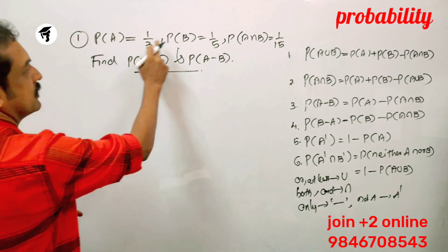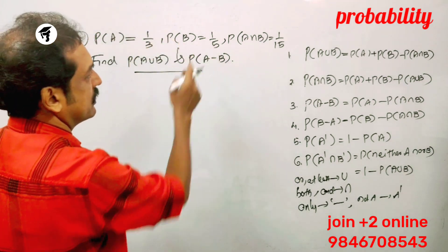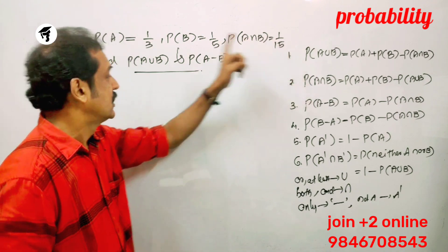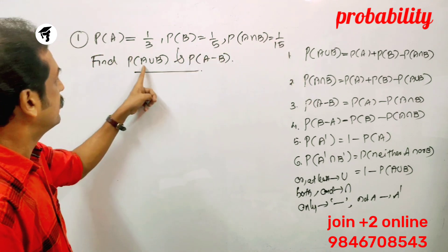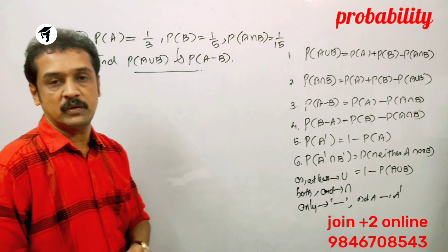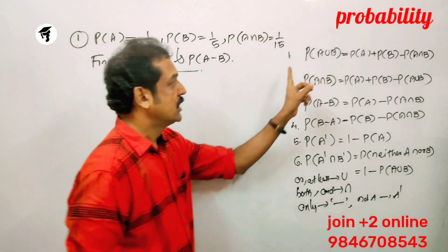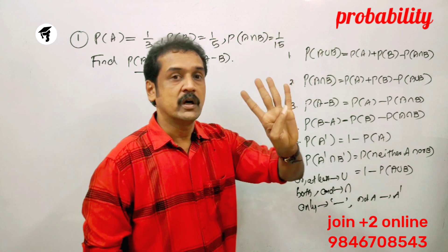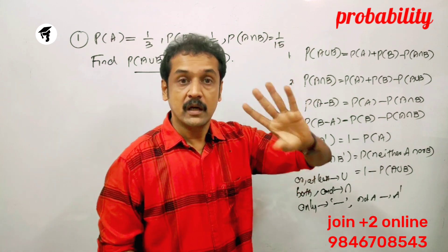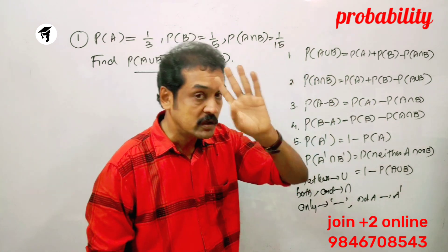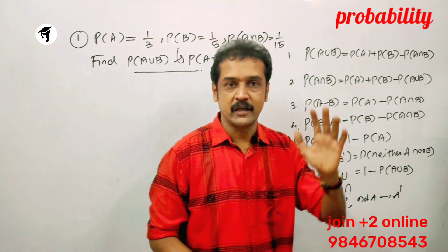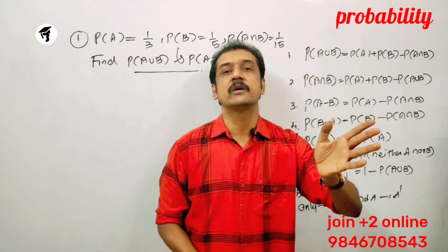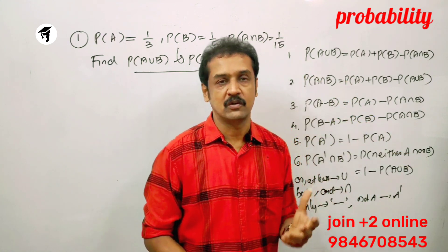If P of A is 1 by 3, P of B is 1 by 5, and P of A intersection B is 1 by 15, find P of A union B and P of A minus B. We have three data values, and using the formula — A union B and A intersection B.